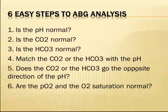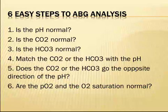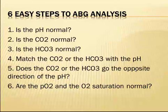Here are six easy steps to ABG analysis based on the normal values mentioned. Step one: analyze if the pH is normal. Step two: analyze the carbon dioxide. Step three: analyze if the bicarbonate is normal. Step four: match the carbon dioxide or bicarbonate with the pH. Step five: does the CO2 or bicarbonate go in the opposite direction of the pH? Step six: are the partial oxygen and oxygen saturation normal?